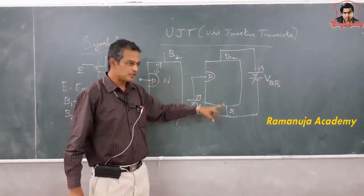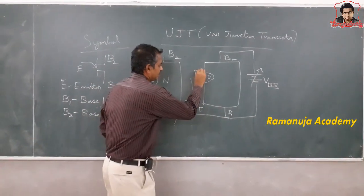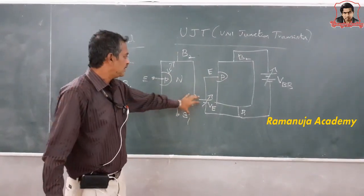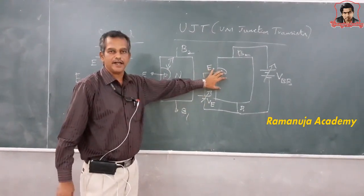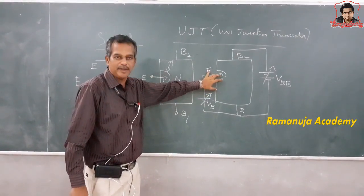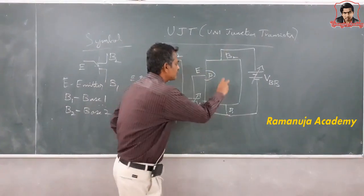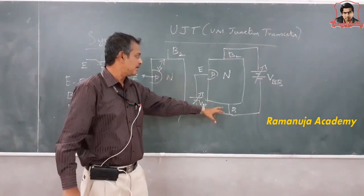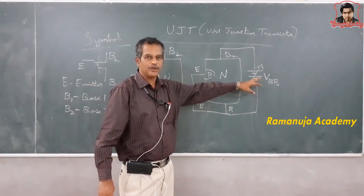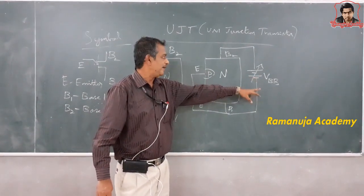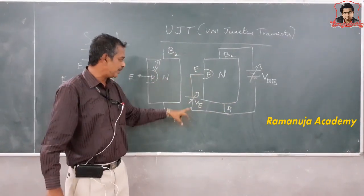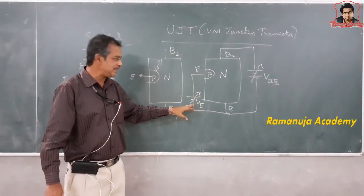We have base 2, base 1, and emitter. The positive voltage is connected to the P-type semiconductor material, which is the emitter. Base 2 and base 1 are both connected to the power supply as shown in the diagram. We name it VBB, and the voltage given to the emitter is VE.